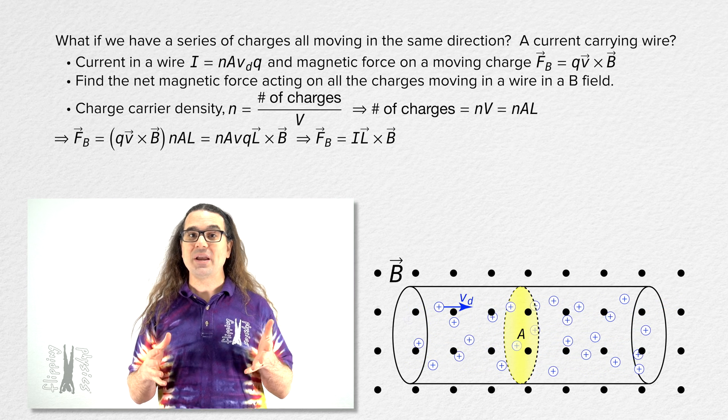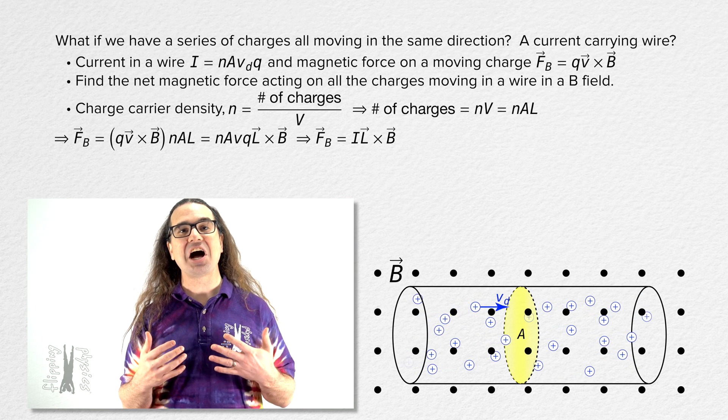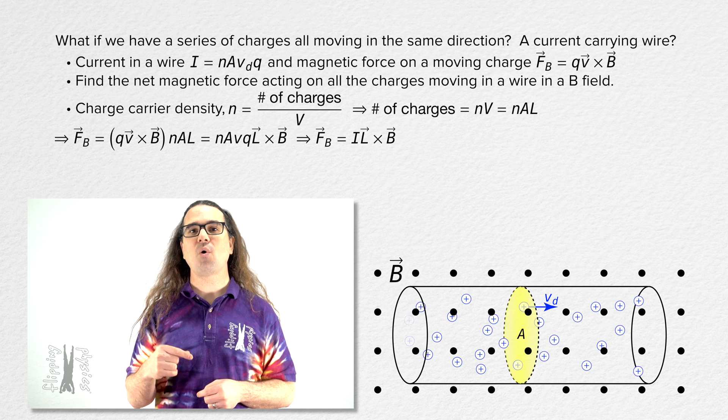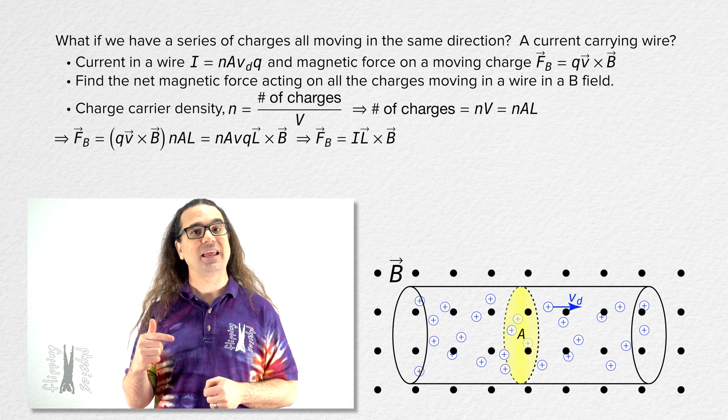So, we now have an equation for the magnetic force acting on a current carrying wire. It equals the cross product of the quantity, current times length, and magnetic field.